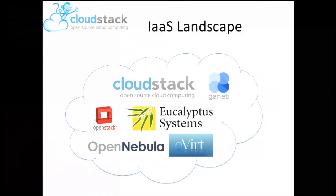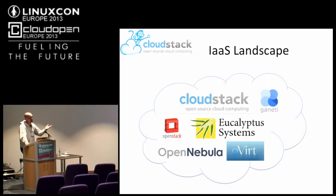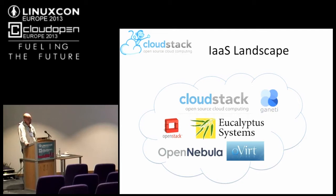When you look at infrastructure as a service, the landscape in open source, you've got different solutions to build that cloud — private or public. You know OpenNebula from Spain, Eucalyptus, which was really the first one to try to clone EC2. There was a talk about Ganetti in the next room earlier. OpenStack, of course, you know the foundation. And then CloudStack, which is an Apache software — it's a top level project.